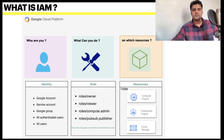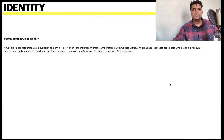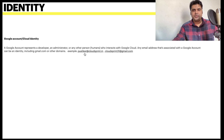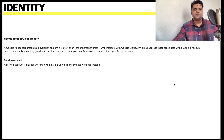If you can answer these three questions, you already have an IAM policy in place. The first identity type is a Google account or Cloud Identity. A Google account represents a developer, administrator, or any human user interacting with Google Cloud. Any email address associated with Google qualifies — for example, a user at cloudsprint.in or a Gmail address.